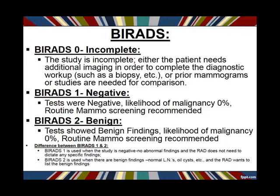BI-RADS 2 is our benign category. This means when we found something on the ultrasound or mammogram, it turned out to be benign. Cases where we'd use this include finding a cyst or a normal lymph node that we don't need to do anything about. BI-RADS 2 benign means the chance of malignancy is zero percent — we don't have to do anything else and can let the patient continue with their normal annual screening mammogram.